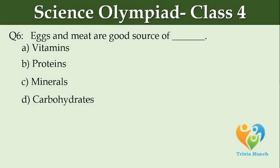Eggs and meat are a good source of dash. Option A: vitamins. Option B: proteins. Option C: minerals. Option D: carbohydrates.